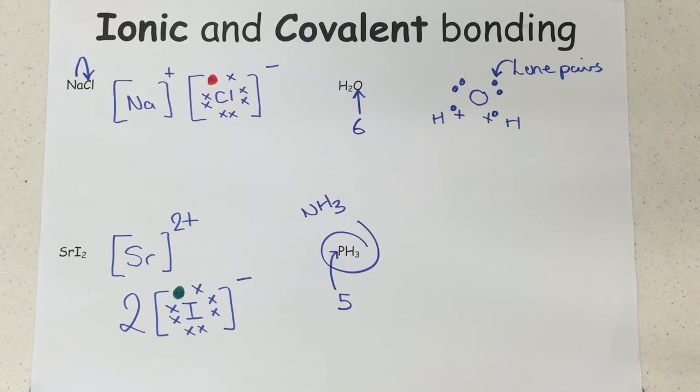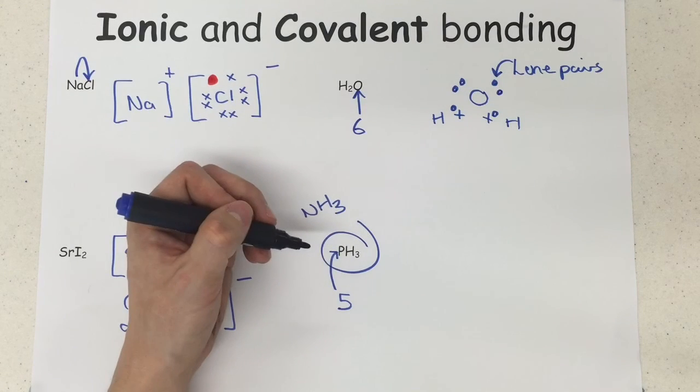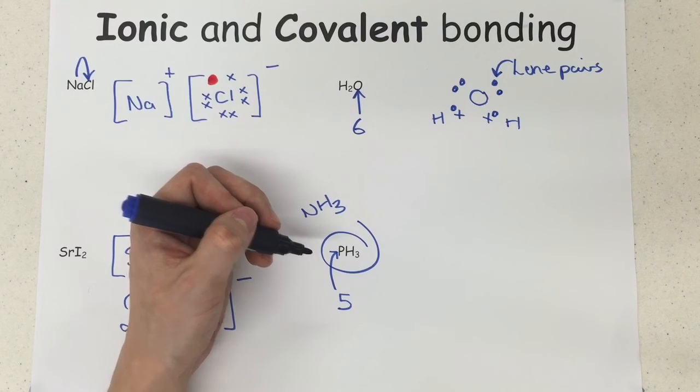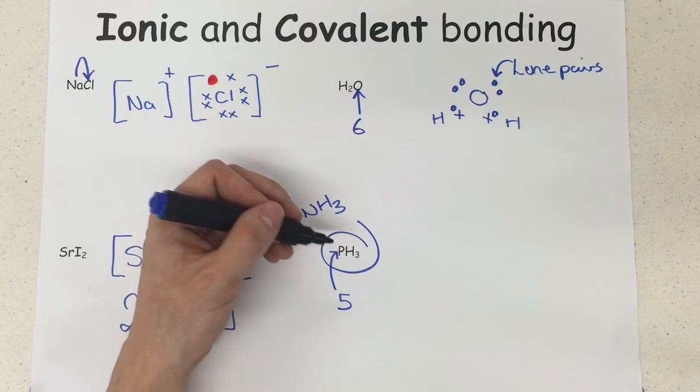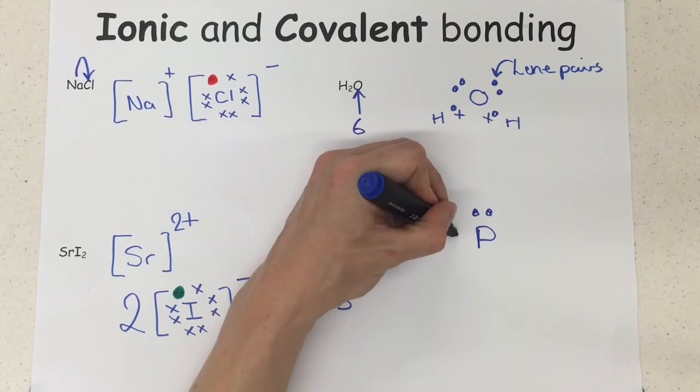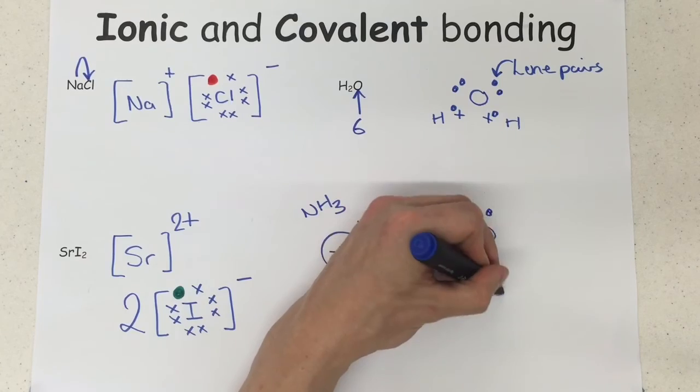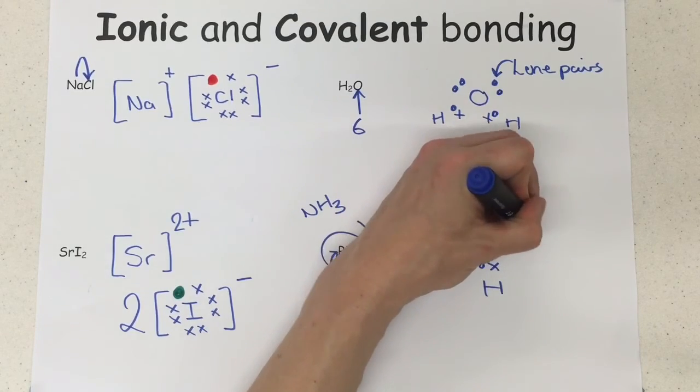Now it's got three bonds, which means three out of those five are going to bond, which means two of them are going to be left unbonded, which is just a lone pair. So phosphorus, lone pair, one bond to a hydrogen, another bond to a hydrogen, and a final bond to a hydrogen.